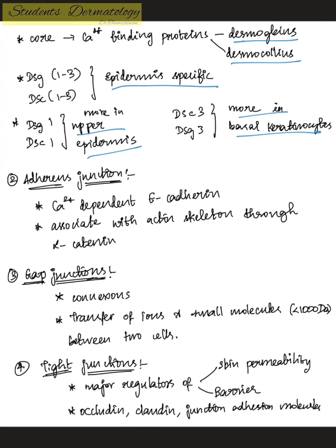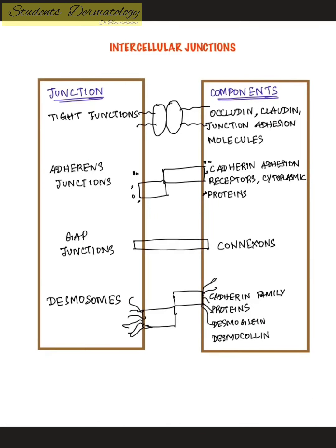Second are adherens junctions, which are calcium-dependent and associated with the actin skeleton through alpha-catenin. Third are gap junctions, whose components include connexins — they help in transfer of ions and small molecules between two cells. Fourth are tight junctions, which are the major regulators of skin permeability and play an important role in barrier function of the skin; their components include claudin, occludin, and junction adhesion molecules.